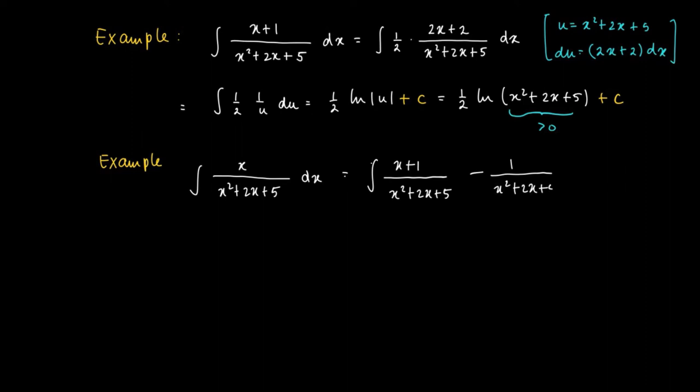Then we try to bring it back into the former example, x plus 1 divided by x squared plus 2x plus 5 minus a constant divided by x squared plus 2x plus 5.